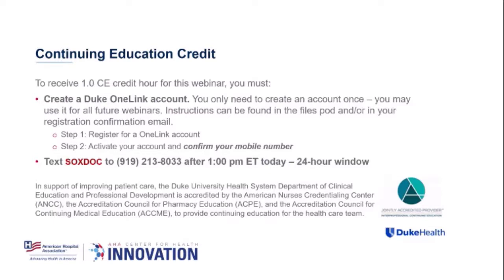As a reminder, this webinar does qualify for one hour of CE credit. You have to take two steps to get this credit. First, if you don't have a Duke OneLink account, create an account. You have to confirm your mobile number there, because the second step is to text SOC DOC to the number that you have on the screen. So make sure if you're going for that CE credit to accomplish those steps before you forget. We also put that code and the text number in the notes pod, so when we move off of this slide, that information will be in there for you.